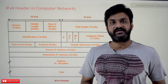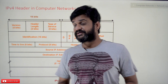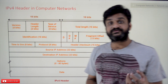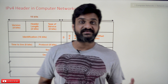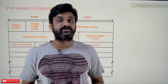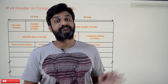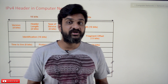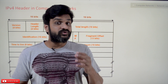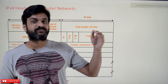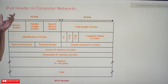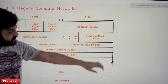Hi, welcome to Learning Monkey. I'm Vikram. In this class we'll try to understand the IPv4 header in computer networks. The concepts of subnetting, subnet masking, variable length subnet mask, and classless and classful addressing have already been discussed in our previous videos. Please watch those videos first. Every video in our channel is part of a course or playlist — follow the entire course for better understanding. The playlist link is in the description below.